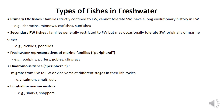Freshwater representatives of marine families include garpikes, puffers, gobies, and stingrays. Diadromous species include salmon, smelt, and eels that can migrate from saltwater to freshwater or vice versa at different stages in their life cycle, often for breeding or reproduction purposes. Euryhaline marine visitors include sharks and snappers — euryhaline means fishes that are able to tolerate a wide range of salinities.